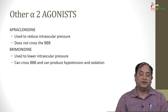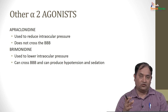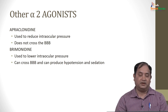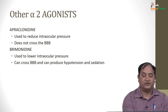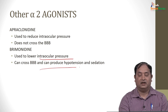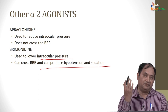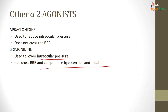Apraclonidine is used in ocular conditions to reduce intraocular pressure and does not cross the blood-brain barrier. Brimonidine is also used to lower intraocular pressure, but it can cross the blood-brain barrier and produce hypotension or sedation — the degree of systemic absorption must be considered.